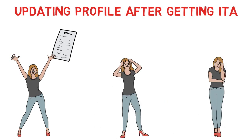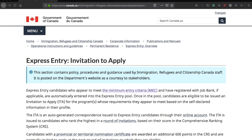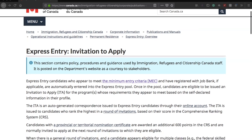You'd wonder: should you decline the ITA, or should you accept it and provide the correct information in the APR — the forms you fill in after the ITA? This has been very explicitly explained on the official website of the Government of Canada. I'll take you there and read out the excerpt where it's clearly mentioned in which cases you should decline the ITA and in which cases you should update the information in the APR.